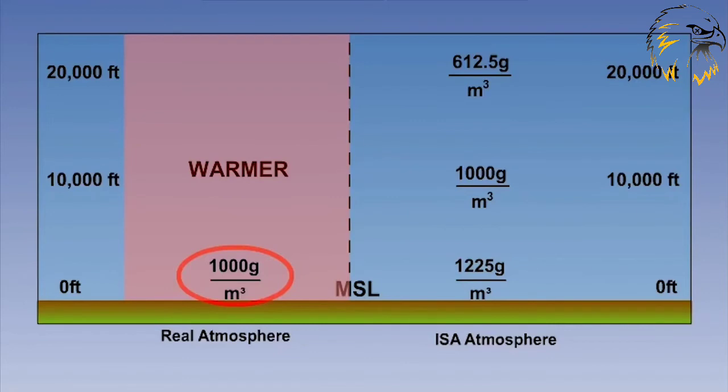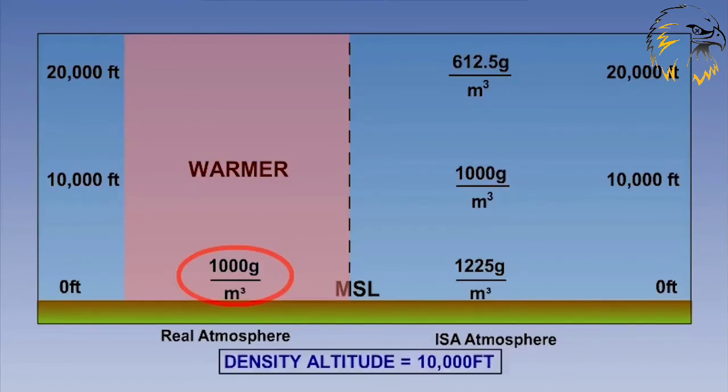However, now let's increase the temperature of our location at sea level. We now know that the density will be less. This new lower density at our location corresponds to a density found at a higher altitude in ISA. In our example, we can see that the density at sea level in the real atmosphere equates to a density found at 10,000 feet in ISA. We therefore say that the density altitude of our location is 10,000 feet. The knowledge of density altitude is important in assessing the effect of the changing density on aircraft performance. We'll cover this later, but for now let's see how we can calculate our density altitude.